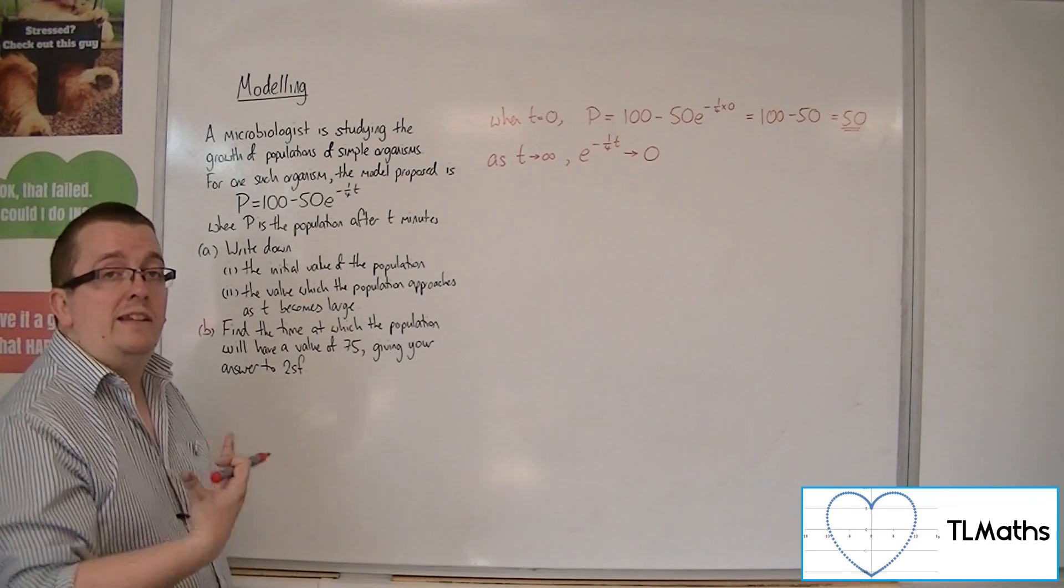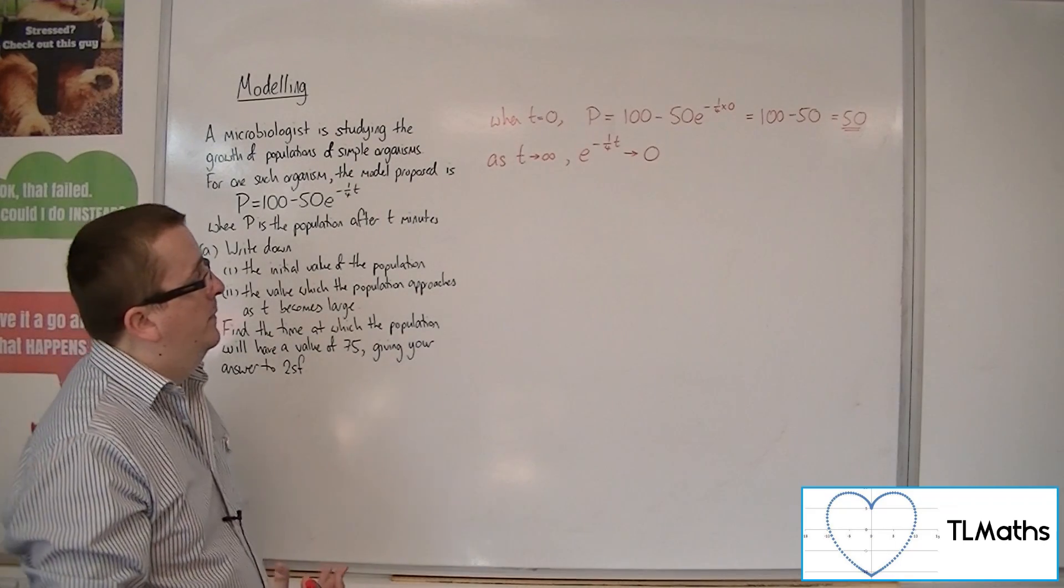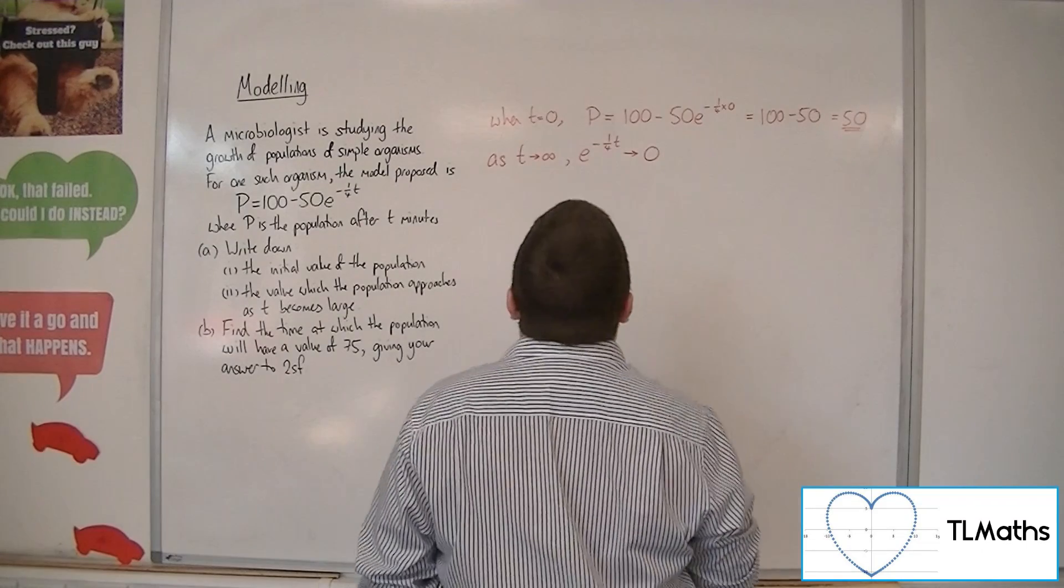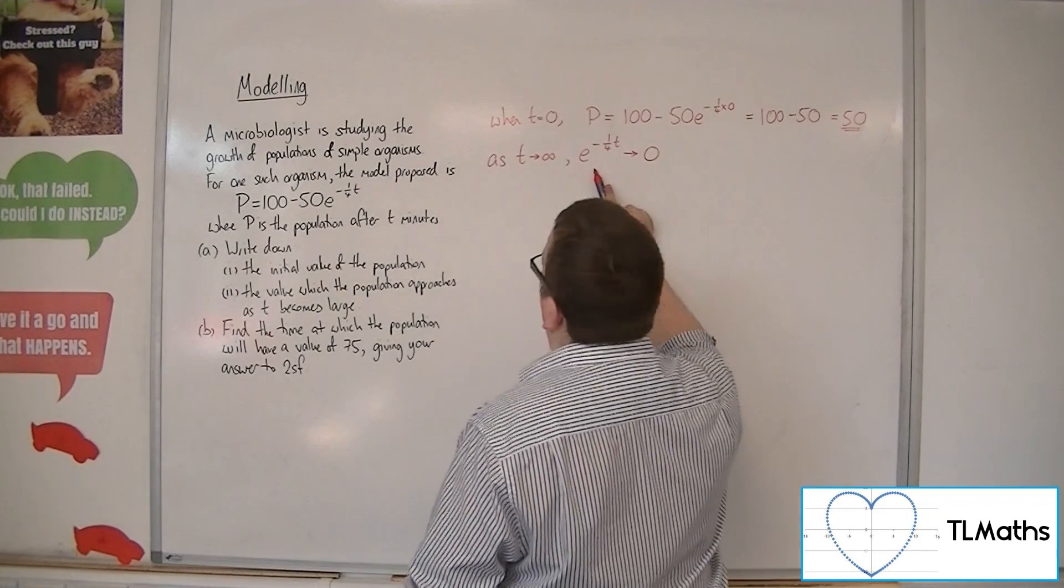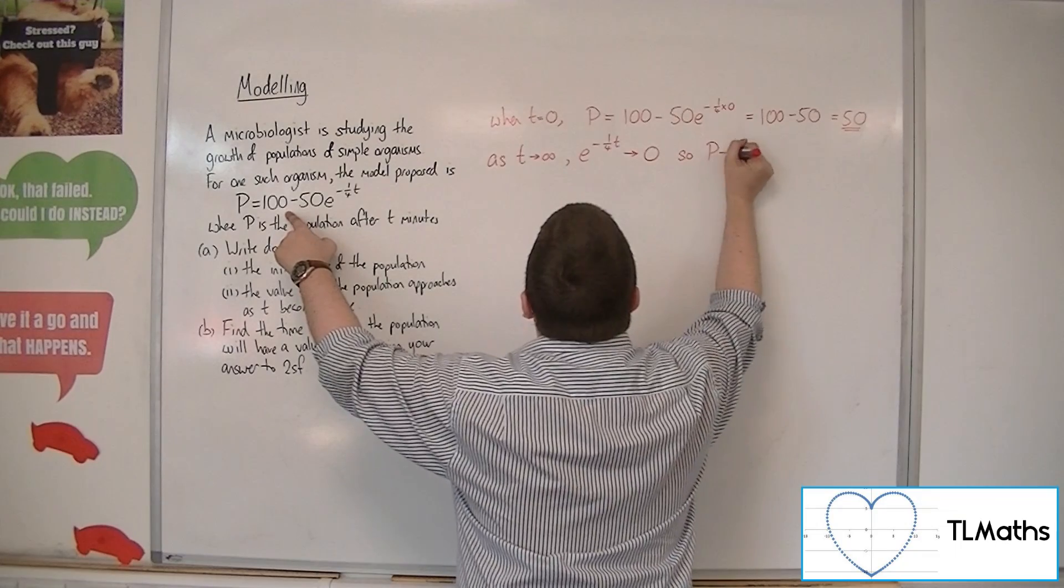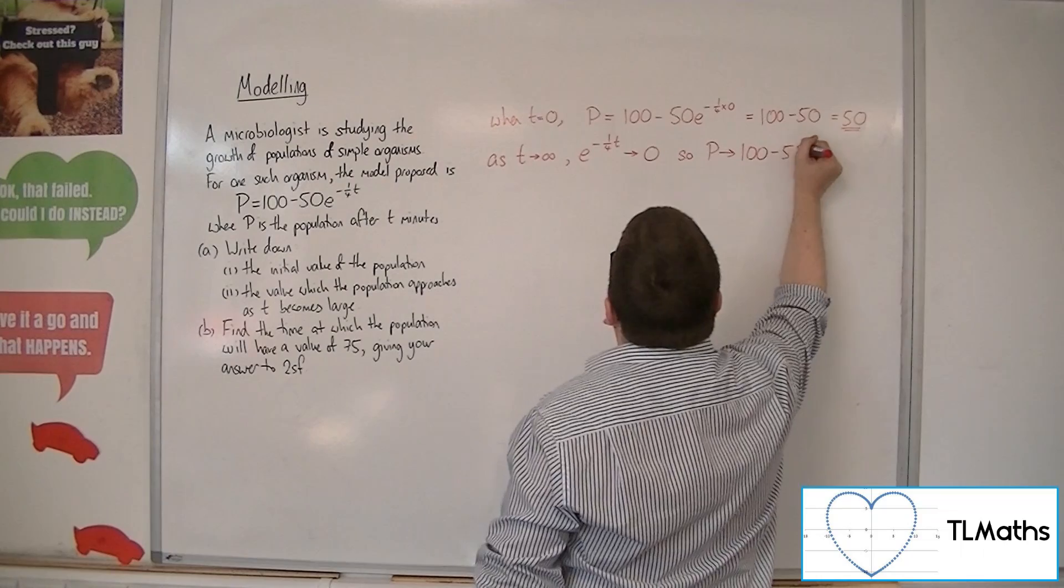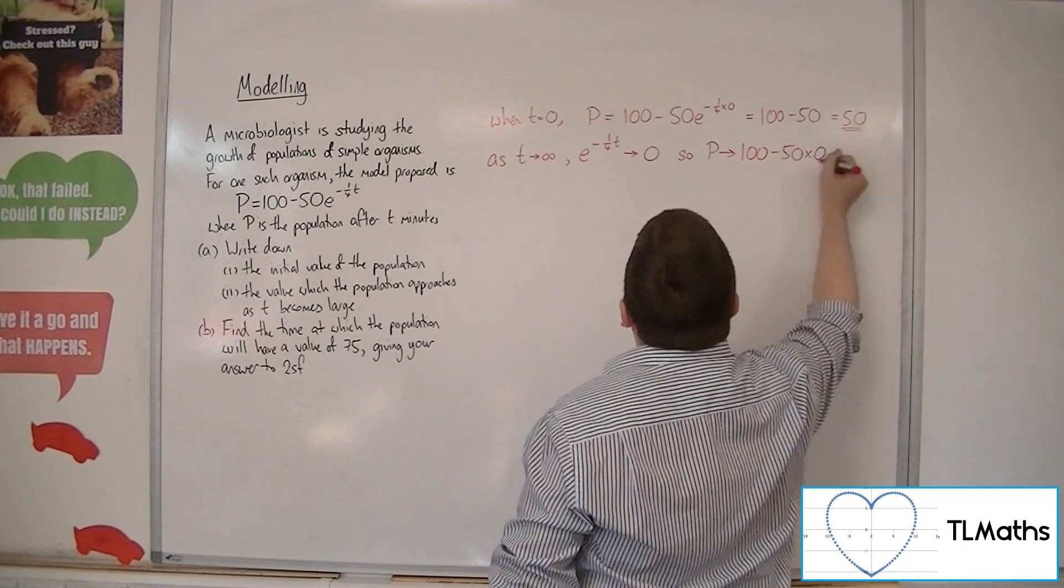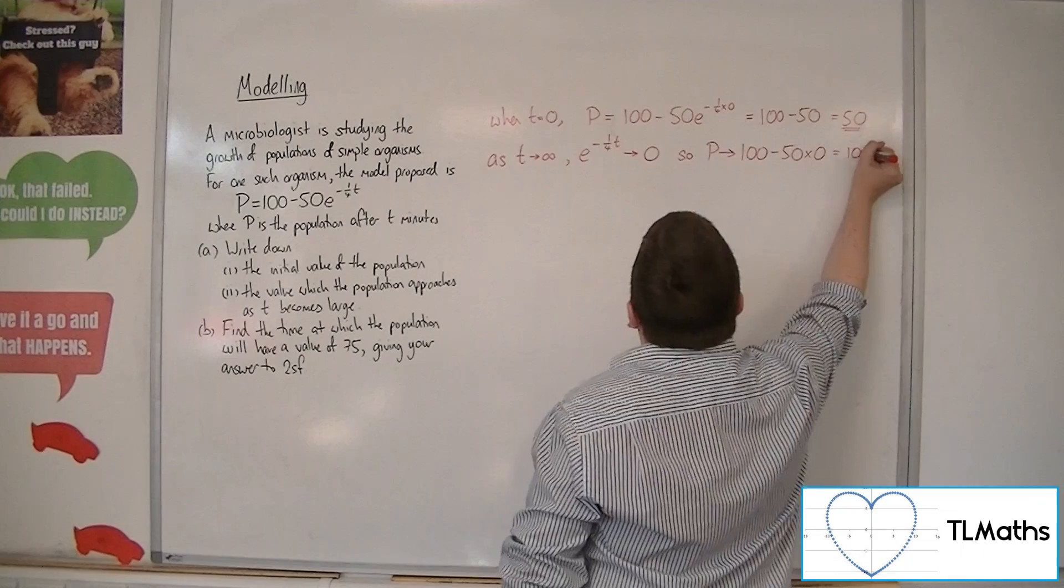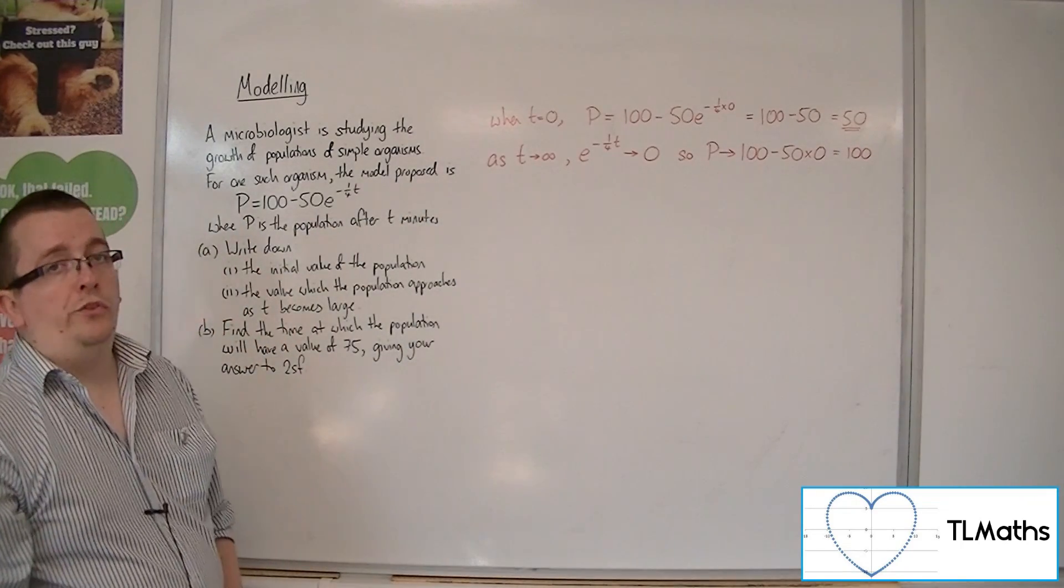The numbers you get as t gets larger get increasingly closer to 0. So as t tends to infinity, that tends to 0. And so p tends towards 100 take away 50 times 0, which is just 100. So as t tends to infinity, p tends towards 100.